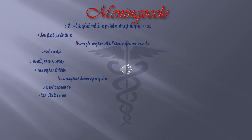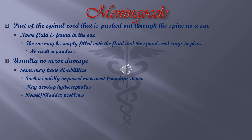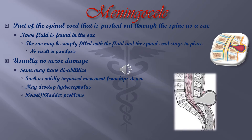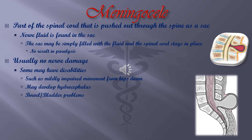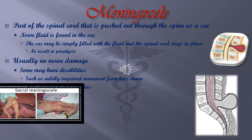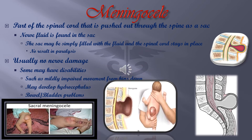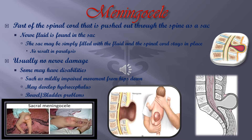Meningocele: part of the spinal cord is pushed out through the spine as a sac filled with cerebral spinal fluid. The sac may simply be filled with fluid while the spinal cord stays in place, in which case there will be no resulting paralysis and no nerve damage. But when there is nerve damage, some people will have disabilities, such as mildly impaired movement from the hips down, and may develop hydrocephalus and/or bowel and bladder problems.